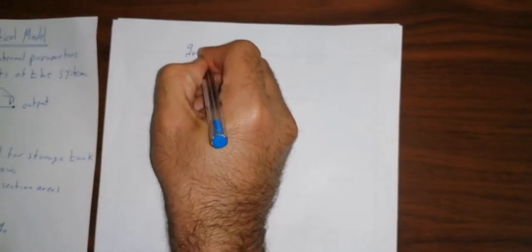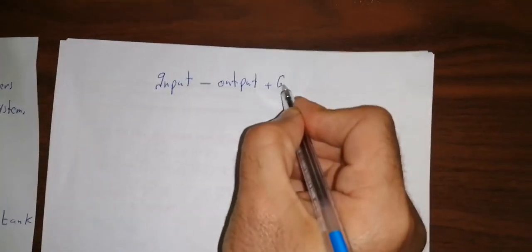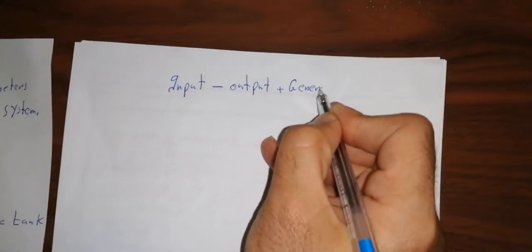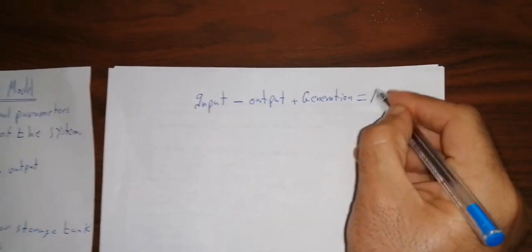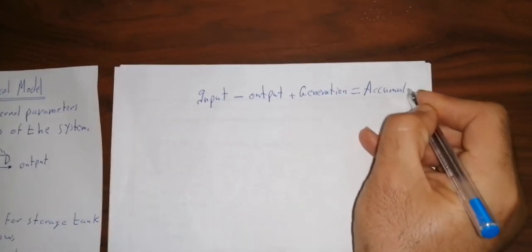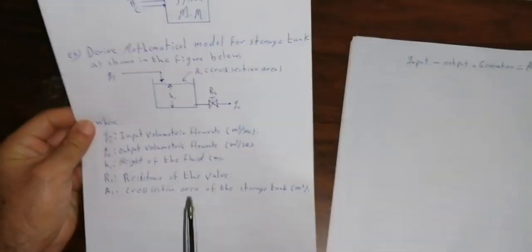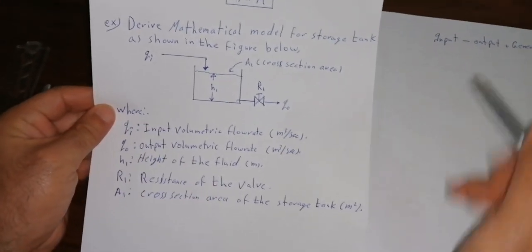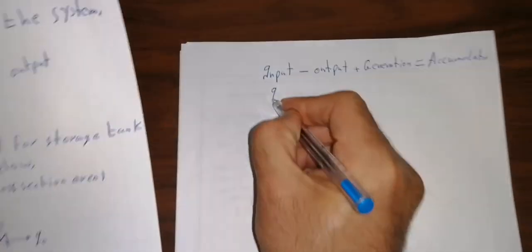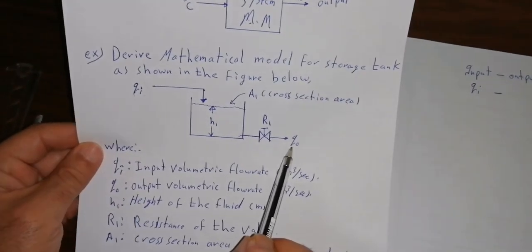We can use the mass balance equation as our mathematical model: Input minus Output plus Generation equals Accumulation. When we apply this to the system, the input is QI and the output is Q_out.